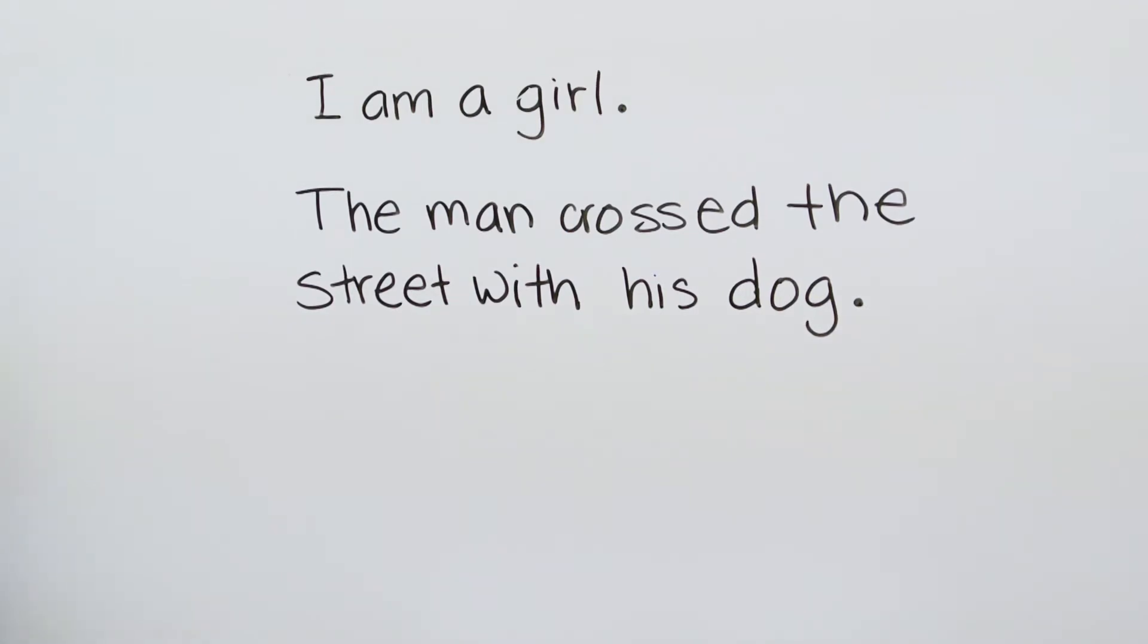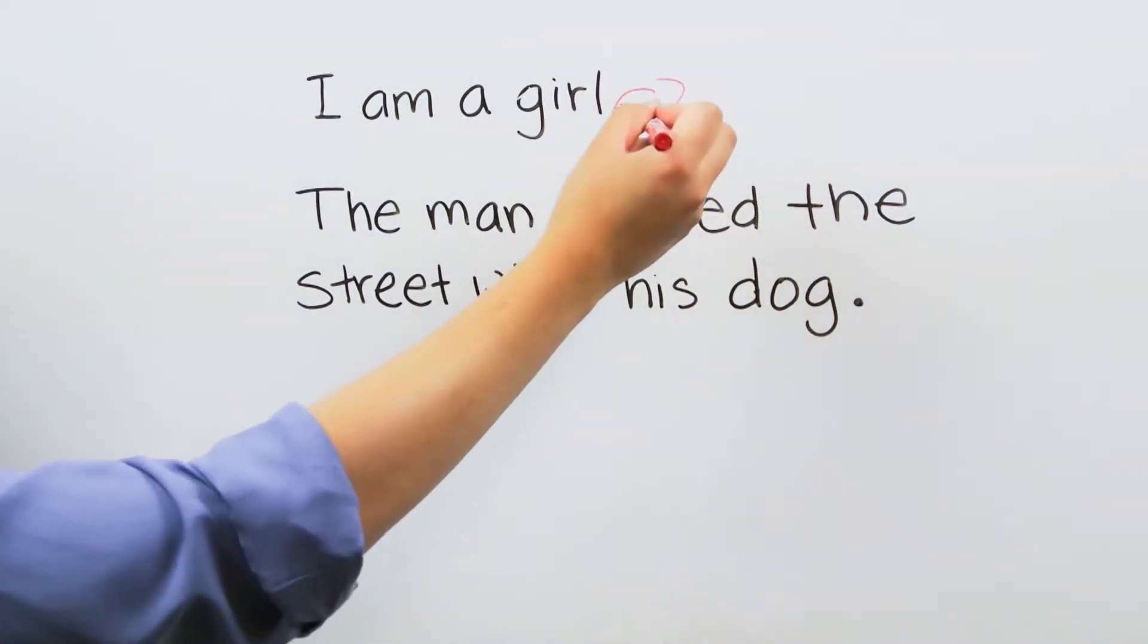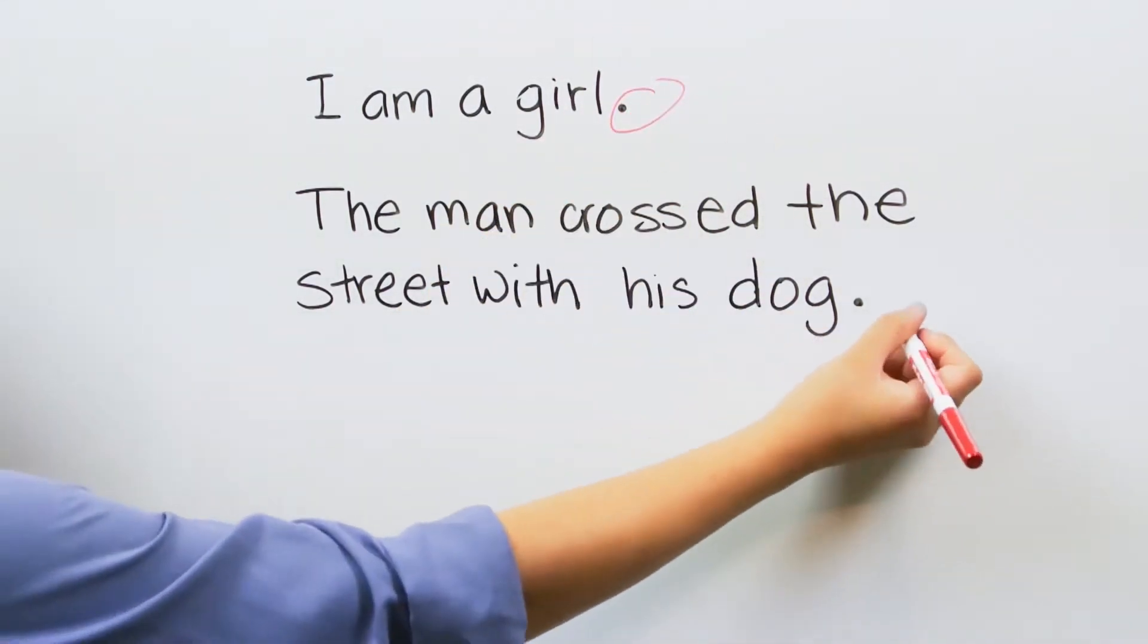As you can see, there is a dot at the end of the sentence. The dot is a symbol for a period.